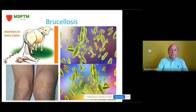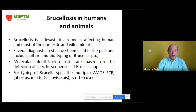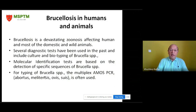Another problem shared by humans and animals is brucellosis, which usually causes abortion in dairy cattle and multiple organ involvement in human beings if it goes chronic. It is a devastating zoonosis affecting humans and most domestic and wild animals. Several diagnostic tests have been used, including culture and biotyping of Brucella species. Molecular identification tests are based on detection of specific sequences of Brucella species, and for typing, the multiplex AMOS PCR is often used — AMOS standing for the species Abortus, Melitensis, Ovis, and Suis.